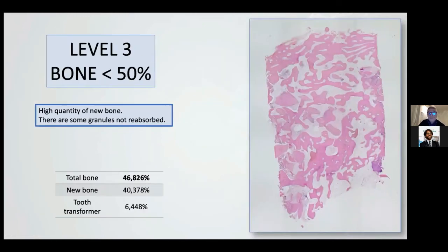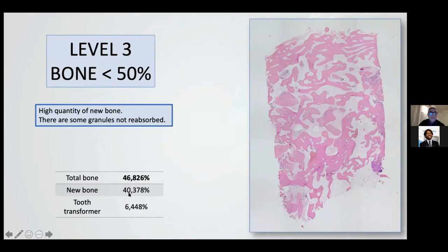Level three is the most common result in our hand. This case is 40% of the total histological analysis. We have new bone 40% and only 6% of dentine remaining. Some granules are visible, but most of the granules are completely resorbed.